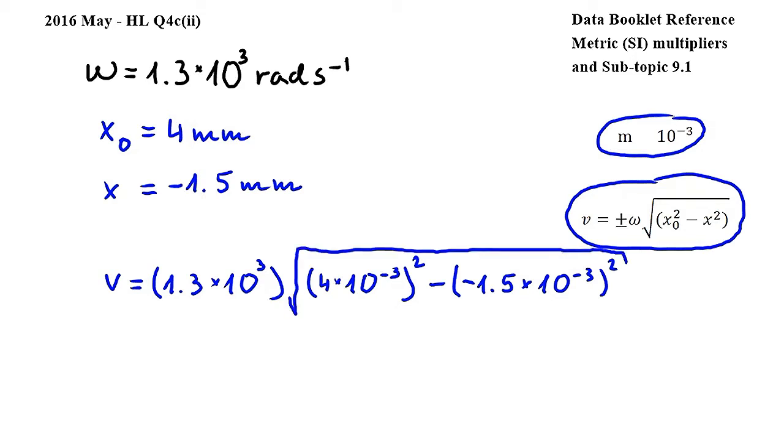Carrying out this calculation, we get approximately 4.82 meters per second, which is about 4.8 meters per second. Note that the given show that answer is 4.9 meters per second. The discrepancy between our answer and the given show that answer is due to rounding, and if you lay out your working, as I have done here, you will receive the two marks on this question.